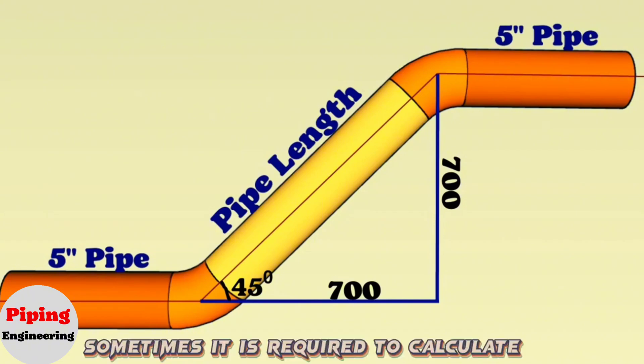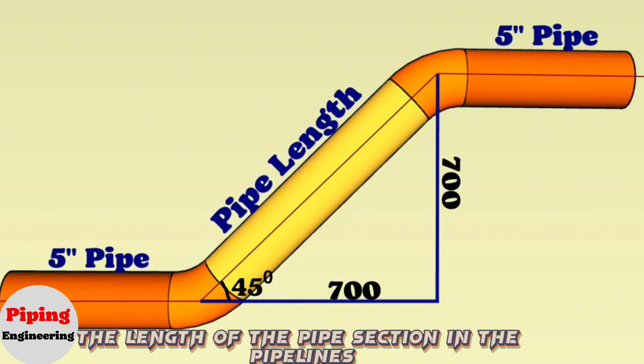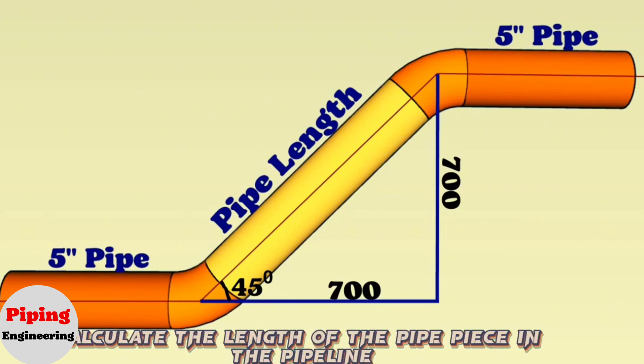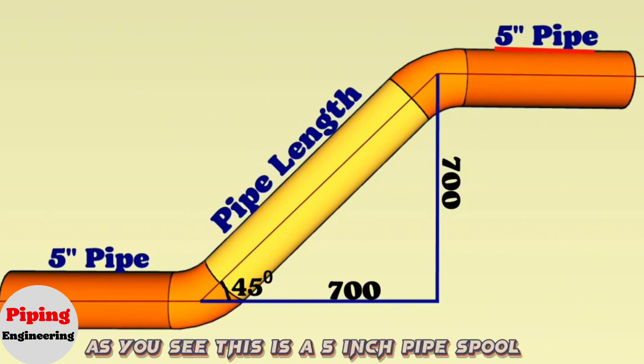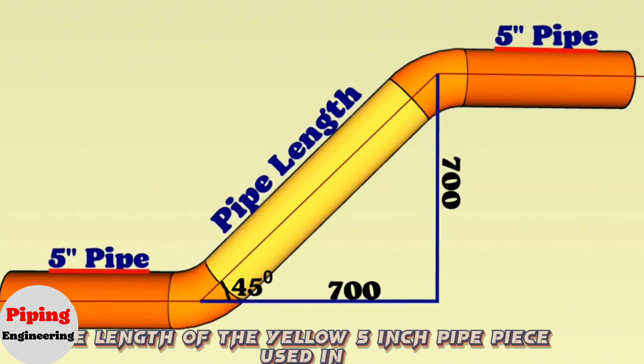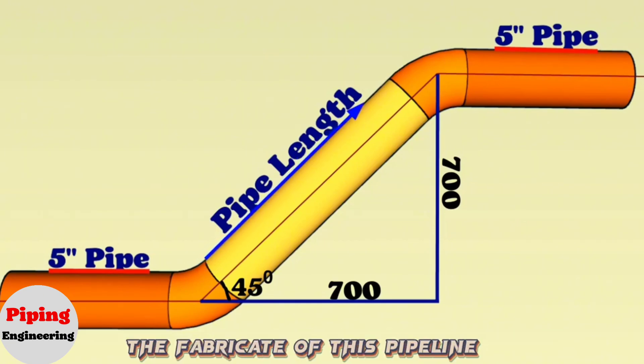Sometimes it is required to calculate the length of the pipe section in pipelines. We tried to explain with examples in this video how to calculate the length of the pipe piece in the pipeline. As you see, this is a 5-inch pipe spool. We need to calculate the length of the yellow 5-inch pipe piece used in the fabrication of this pipeline.